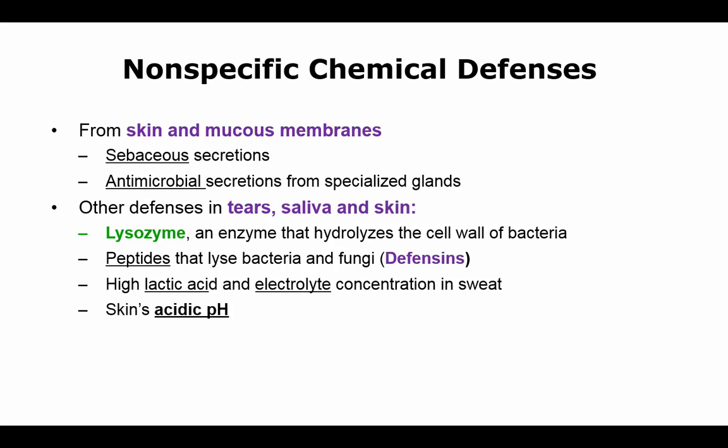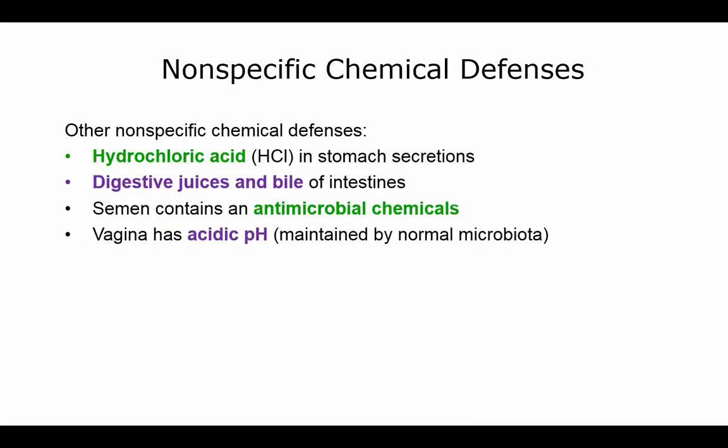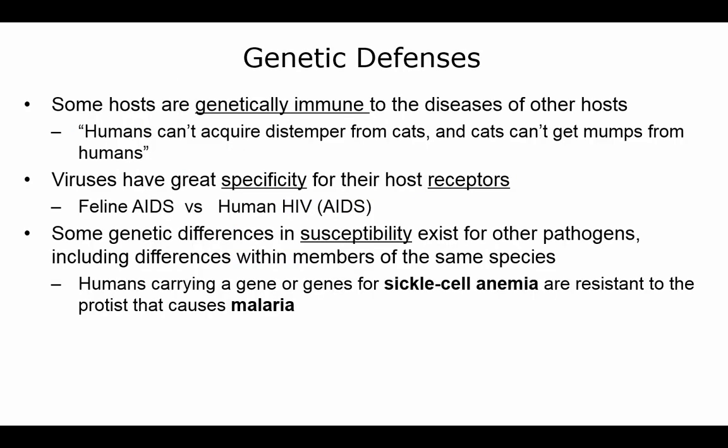There is a high concentration of lactic acid and electrolytes in your sweat, and the skin is acidic, so many microbes can't survive in that environment. You also have hydrochloric acid in your stomach and digestive juices in bile in your large and small intestine. Semen has antimicrobial chemicals, and there's a normal acidic pH in the vagina. All of these are non-specific chemical defenses.